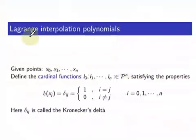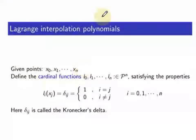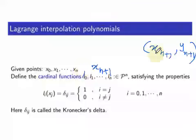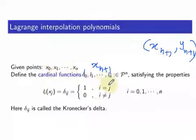Another disadvantage of using the Lagrange polynomial is: suppose you want to perform your experiment again and you get another data point, say x sub n plus one. This is a new data point, and the corresponding y value is also new.